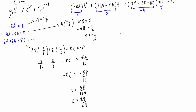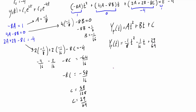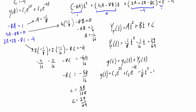We've found A, B, and C. Since the particular solution has the form At² + Bt + C, our particular solution is y_p(t) = −(1/8)t² − (1/16)t + 29/64. The general solution is y(t) = y_c(t) + y_p(t), so adding the complementary and particular solutions together gives us the general solution to the original differential equation.